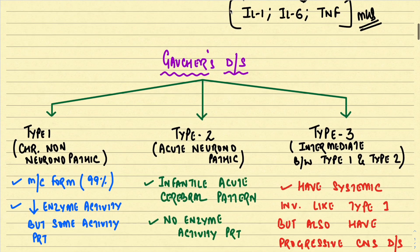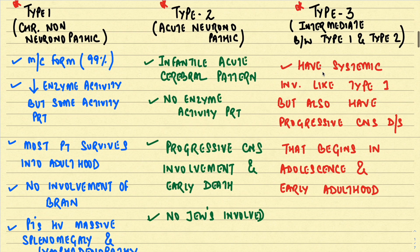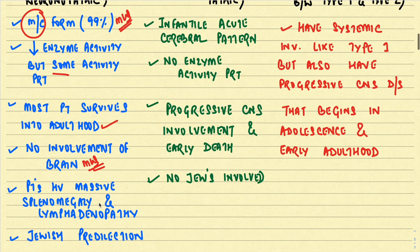Gaucher's disease is classified into three types. Type 1 is the chronic non-neuronopathic form with sparing of the CNS, and it is the most common form, contributing to 99% of all cases. It is characterized by reduced but present enzyme activity; patients survive into adulthood, show no brain involvement, have massive splenomegaly and lymphadenopathy, and have a Jewish predilection.